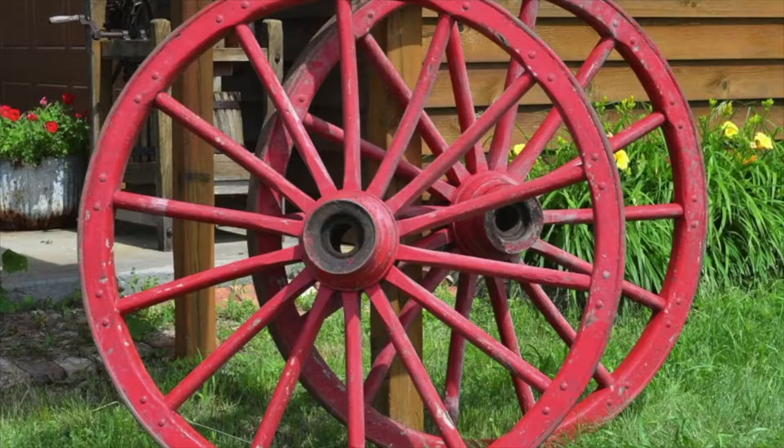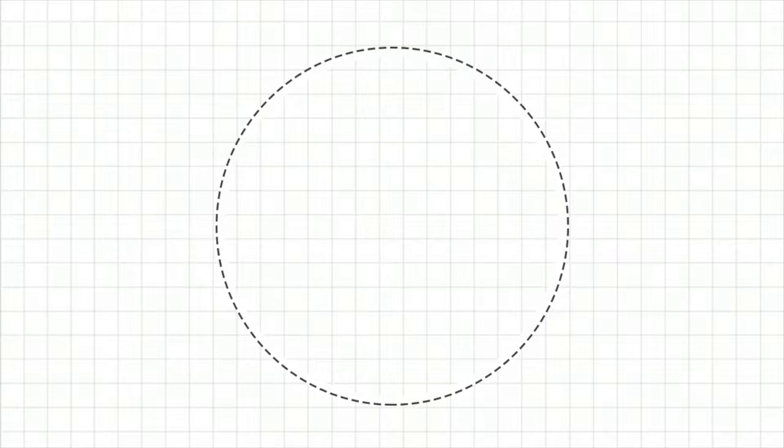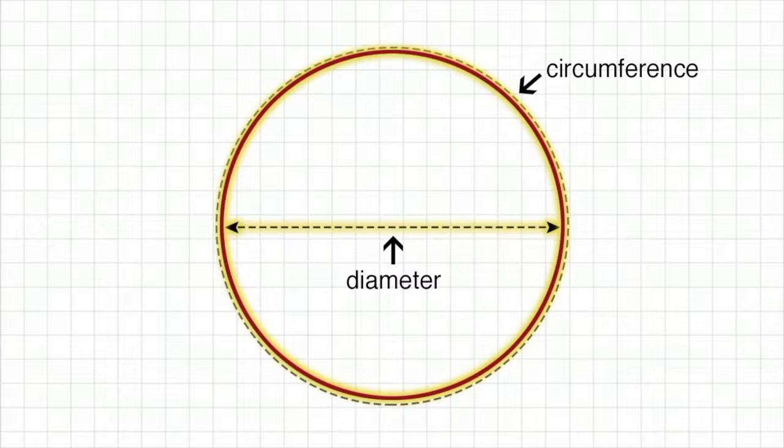Many natural and human objects are circle-shaped. A circle is a geometric figure with several special properties. Two basic dimensions of a circle are its circumference and its diameter.